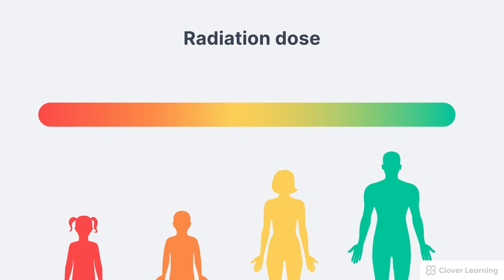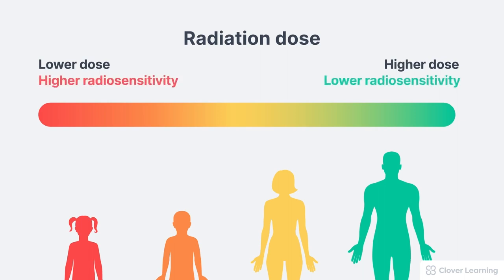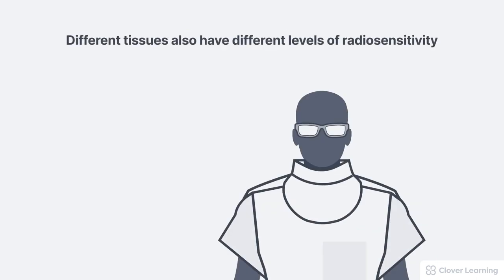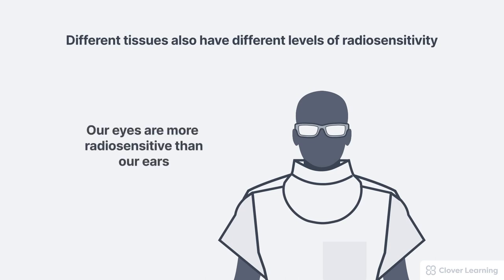For example, the radiation dose used for imaging children should be much smaller than the dose used for imaging adults. That's partly because children are smaller, but also because children are more radiosensitive — they are more susceptible to the damaging effects of radiation. Different tissues also have different levels of radiosensitivity. Our eyes and our thyroids are more susceptible to radiation injury than, say, our ears. That's why x-ray operators commonly wear eye and thyroid shielding, but not ear shielding.